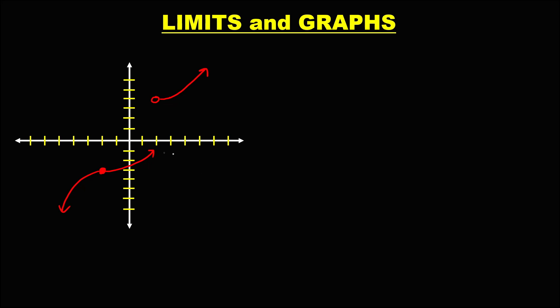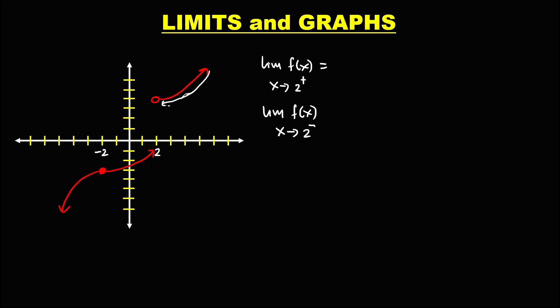For this graph, to evaluate the limit: this is positive 2 and negative 2. To find the limit of f(x) as x approaches positive 2 from the right, and also the limit as x approaches positive 2 from the left. For the right side limit, x approaches positive 2 from the right, and the limit is equal to positive 4.